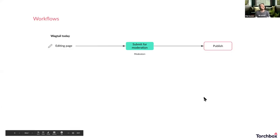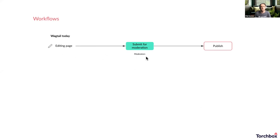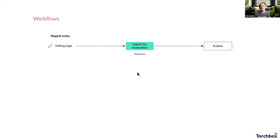Thanks, Tom. The existing Wagtail workflow is fairly easy to understand. As standard in Wagtail today, an editor can edit a page but they can't publish. They can submit to a task called moderation, and then moderators review the content and publish the page, or return it to the editor for changes. This has served Wagtail well, as many small organizations don't need more complexity. However, for larger, more complicated organizations, managing quality assurance and sign-off can become quite difficult. We're happy to say that on the 1st of August, Wagtail 2.10 will bring the ability for more complex workflows.